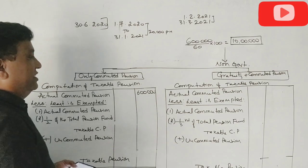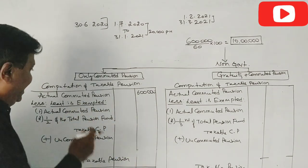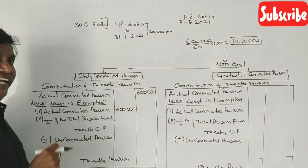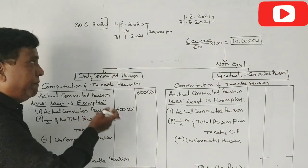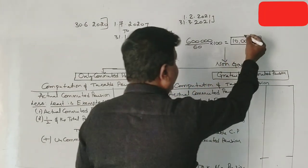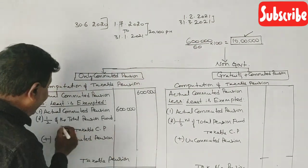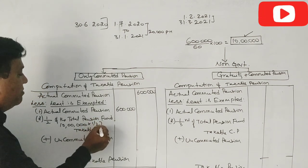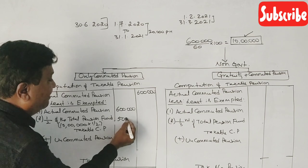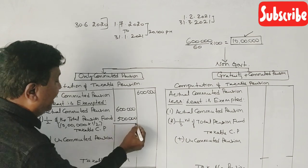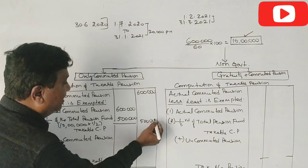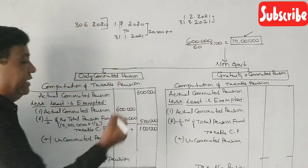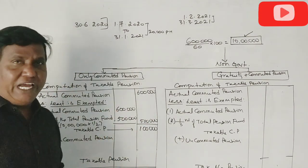Okay, now actual commuted pension is six lakhs. So, for one-half of the total pension fund, the total pension fund is 10 lakhs. The half amount is the exemption limit - half amount is 5 lakhs. So the taxable commuted pension is then one lakh rupees. Commuted pension is correct.